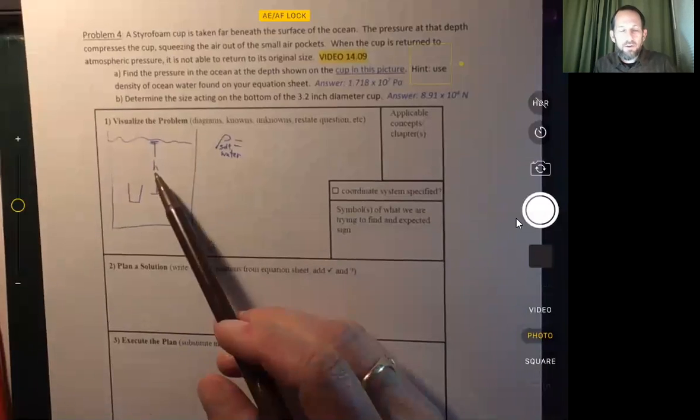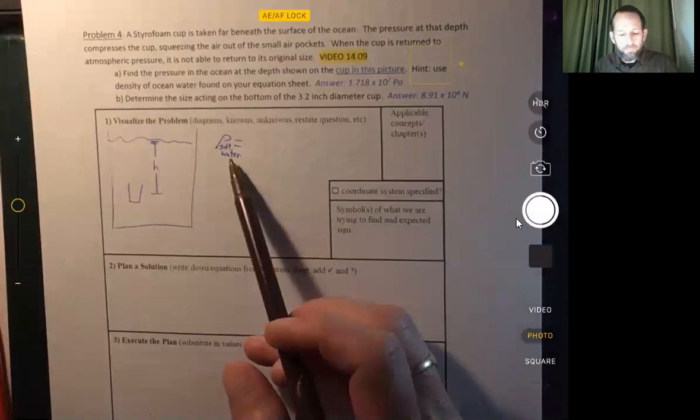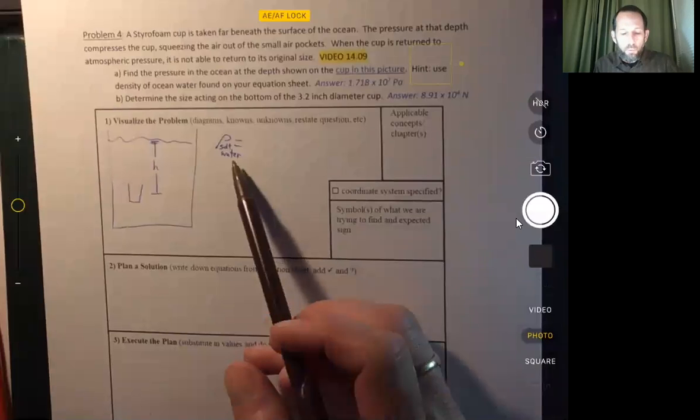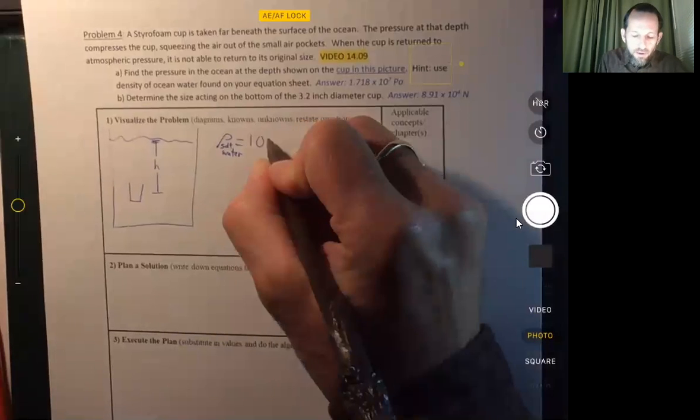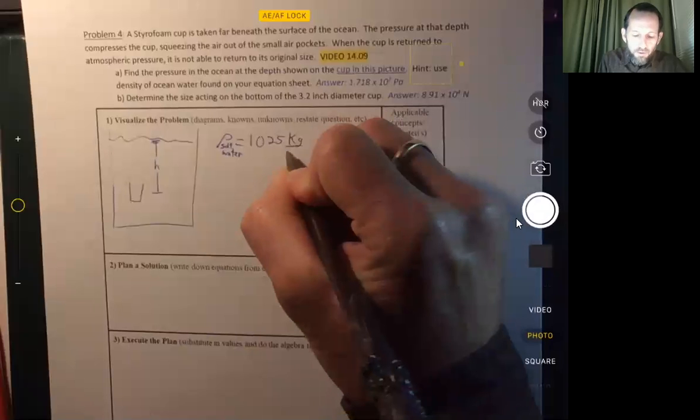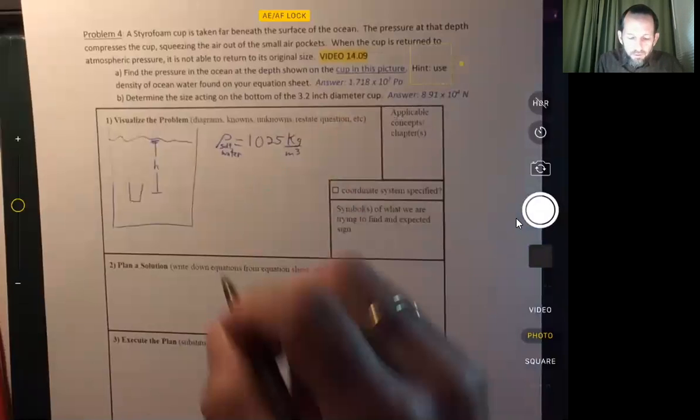That's at that height that you saw in the picture. So hopefully you looked at the picture because you're going to need that height. And we need the density of salt water. And we look on our equation sheet and we see it's 1025 kilograms per cubic meter. And what else do we know?